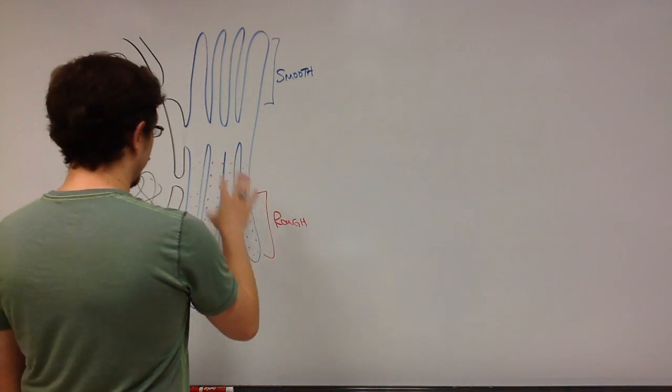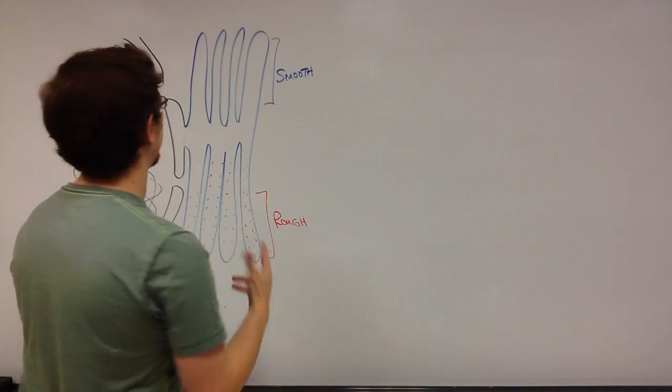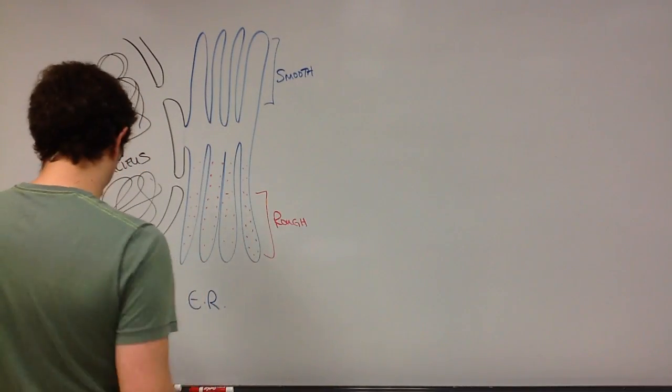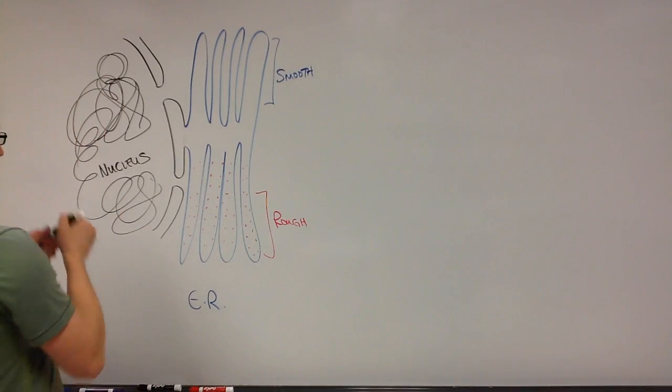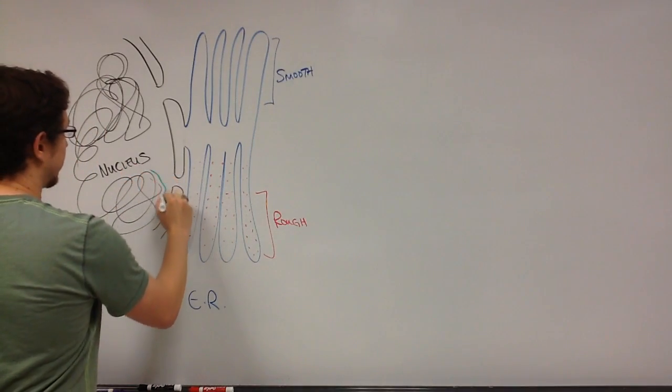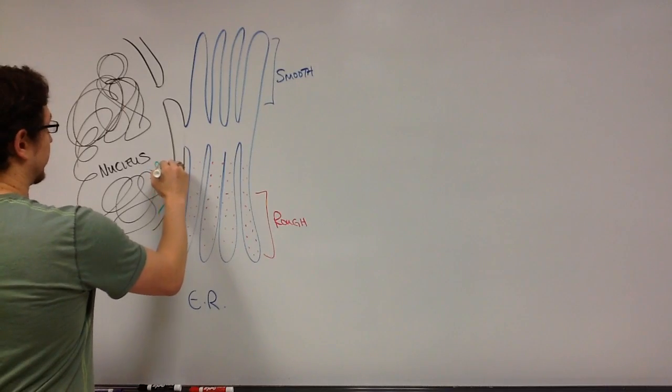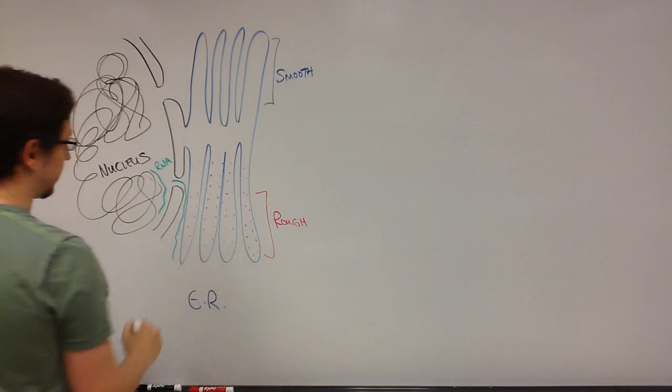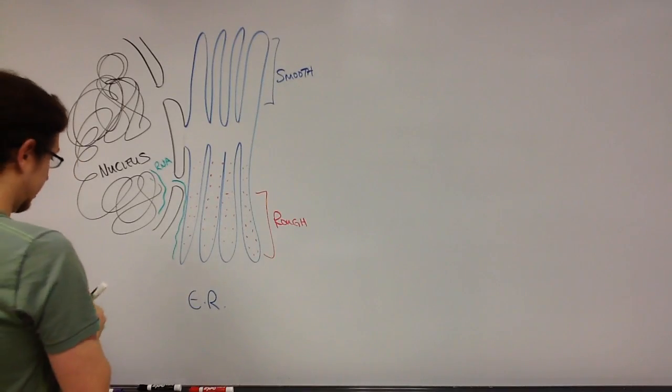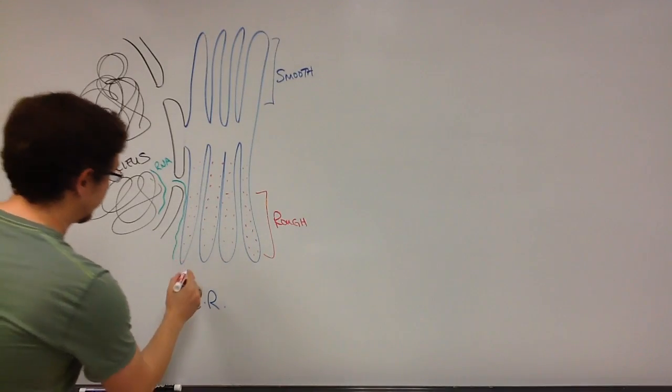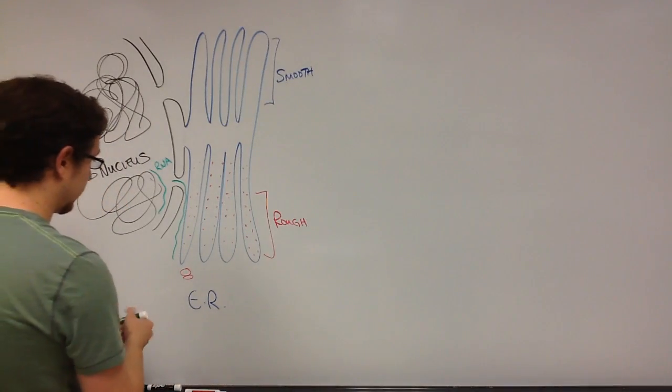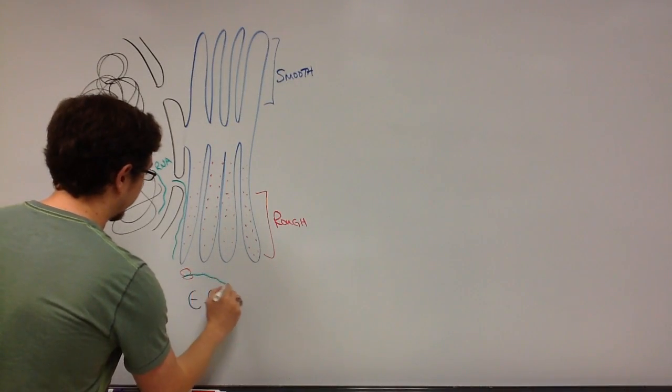Now the rough ER is going to be involved in the endomembrane system. Smooth ER, not technically. So let's start at the nucleus where we are going to take a piece of DNA and we're going to transcribe it into RNA. That RNA is going to leave through one of the pores in the nucleus and then it's going to be bound by a ribosome so that it can be translated into a protein.